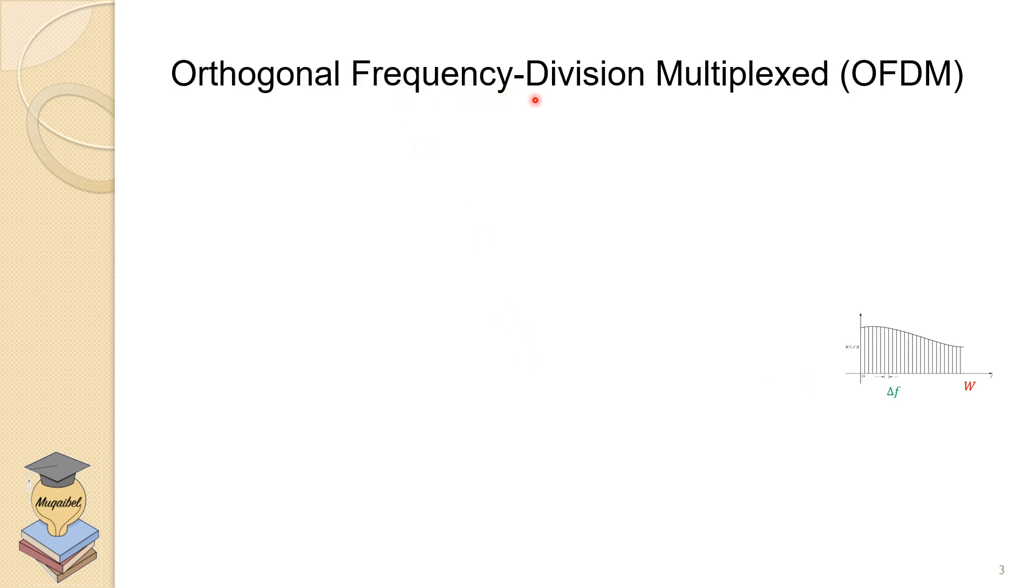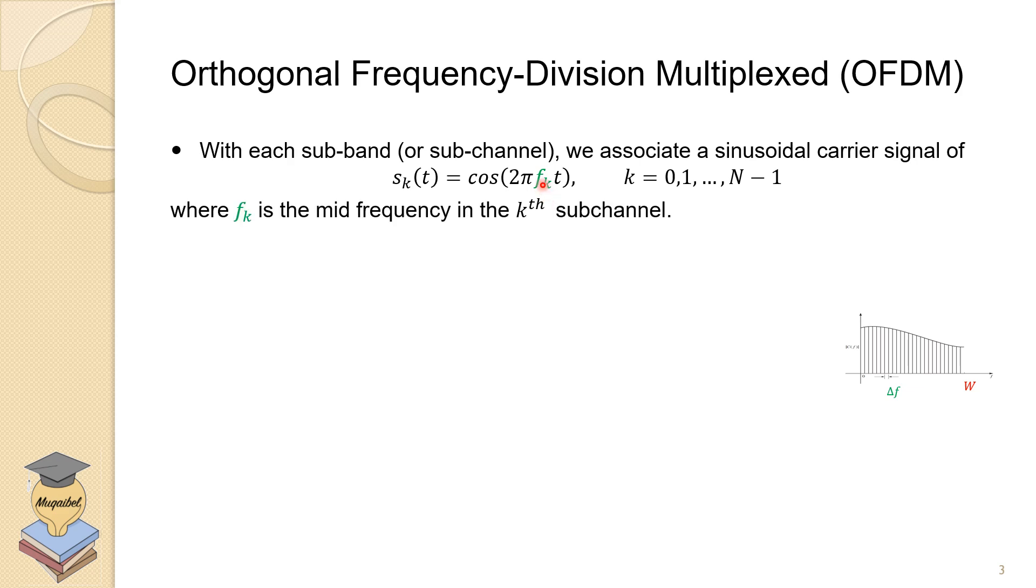For the case of orthogonal frequency division multiplexing, we have in each subband or subchannel, we're going to send a signal. Let's say we are going to send a sinusoidal signal cos(2π f_k t). And of course, from one band to another, we're going to send different carrier frequency where f_k represents the medium frequency or the center frequency for the kth subchannel.